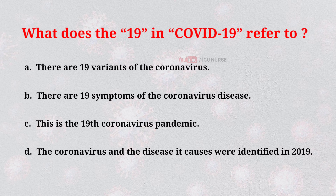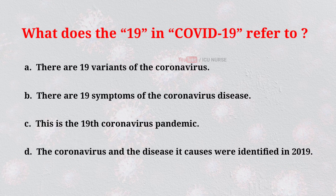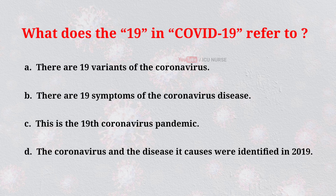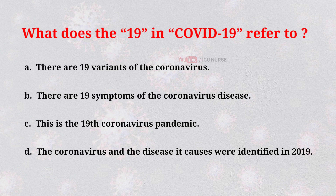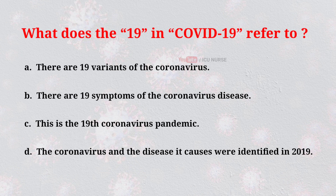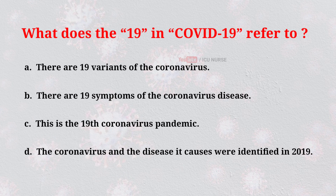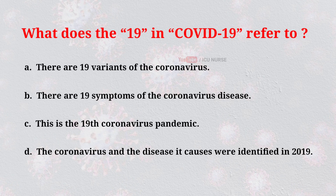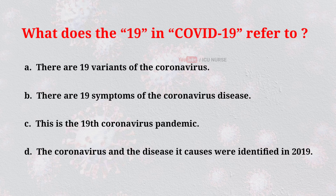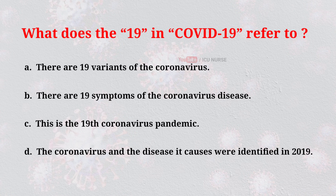What does the 19 in COVID-19 refer to? A. There are 19 variants of the coronavirus. B. There are 19 symptoms of the coronavirus disease. C. This is the 19th coronavirus pandemic. D. The coronavirus and the disease it causes were identified in 2019.